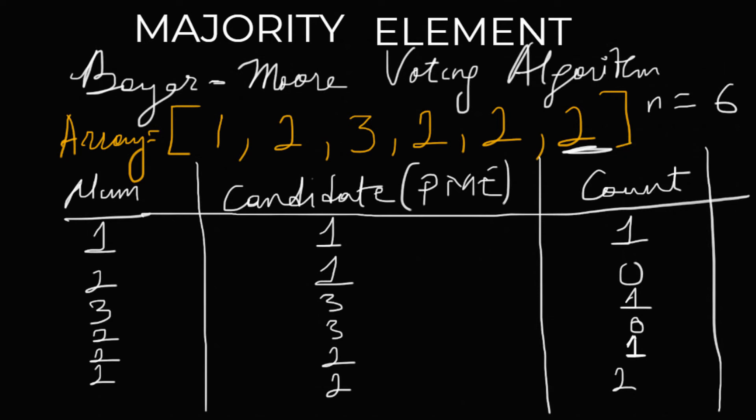The reason why this algorithm works: you're decrementing the counter every time you see a number different from the potential majority candidate, and incrementing every time you see the candidate. That potential majority candidate is going to appear at least more than n/2 times — in this case, 4 times. So for 4 instances you keep adding, and for 2 instances you keep decrementing. After iterating through the entire array, your counter variable is still going to be above 0, and you still have a valid candidate.